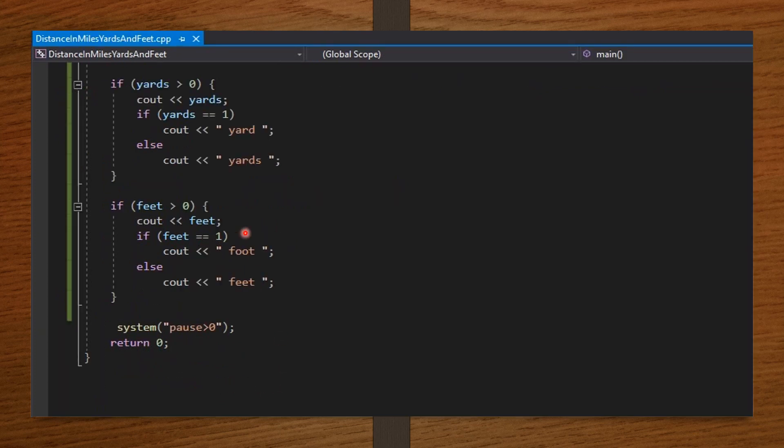So, as I said, if yards is greater than 0, cout yards. If yards is 1, display 'yard', else, display 'yards'. The same thing with the feet. For feet, if it is 1, display 'foot', else, display 'feet'. System pause is greater than 0. This will ensure that only the needed information will be displayed when we run our code. And by custom, return 0.